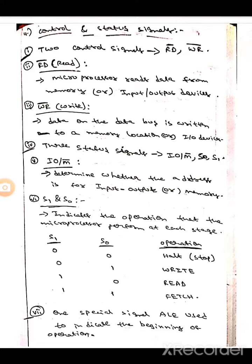Whereas the next one is S1 and S0. Here it indicates the operation that microprocessor should perform at each stage.